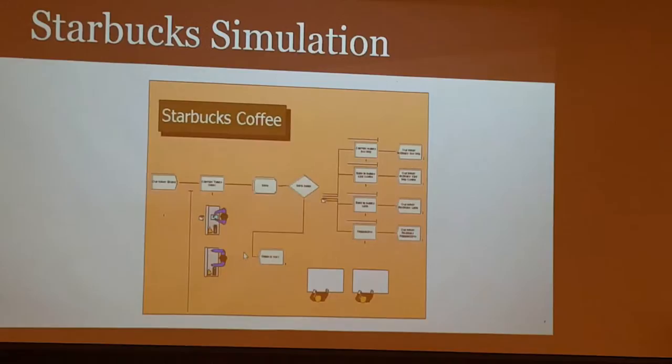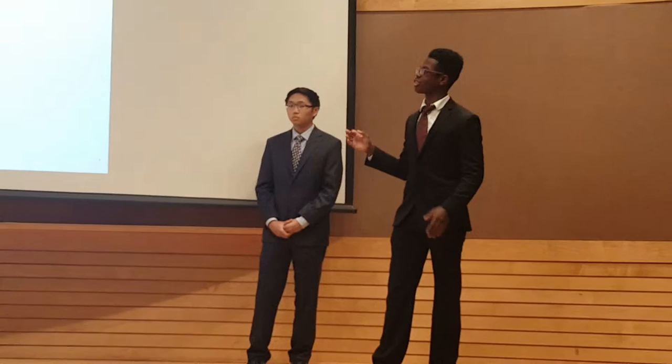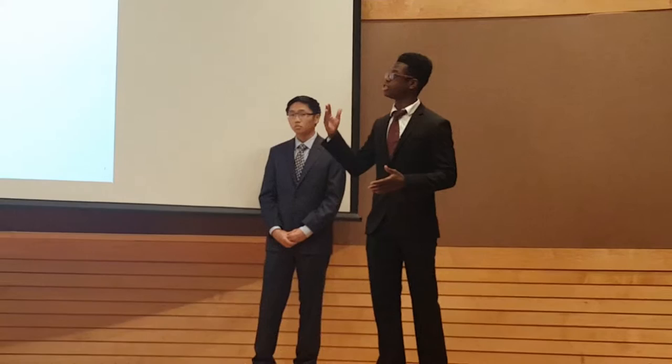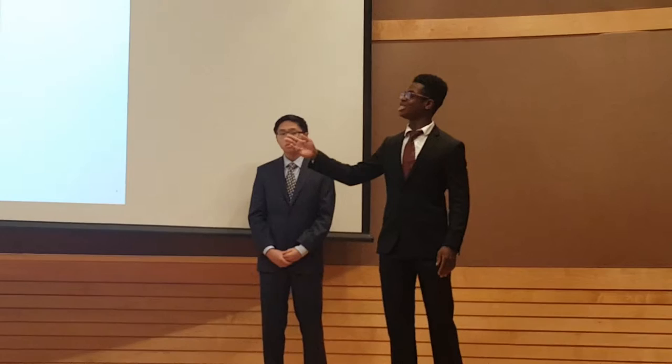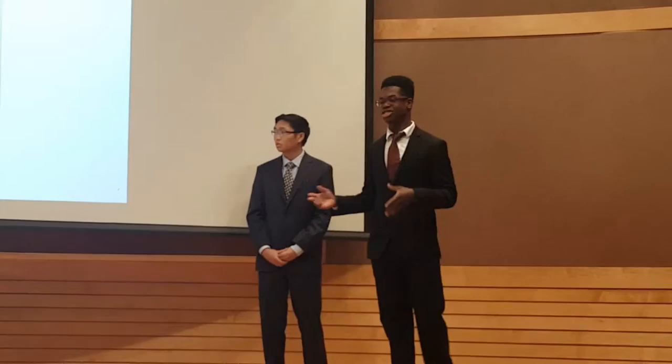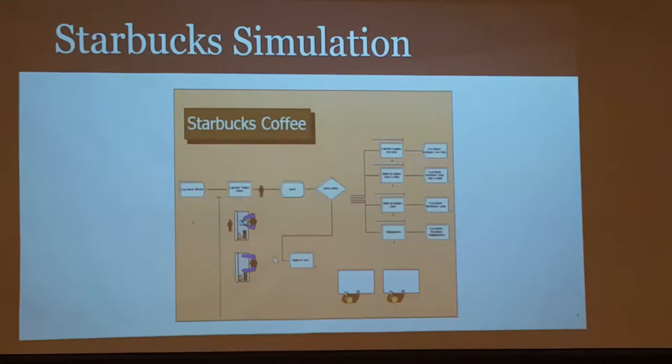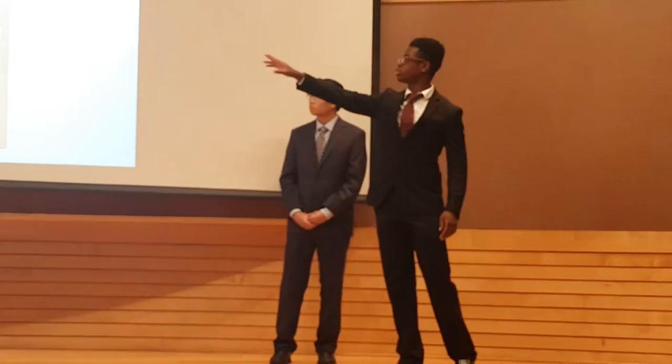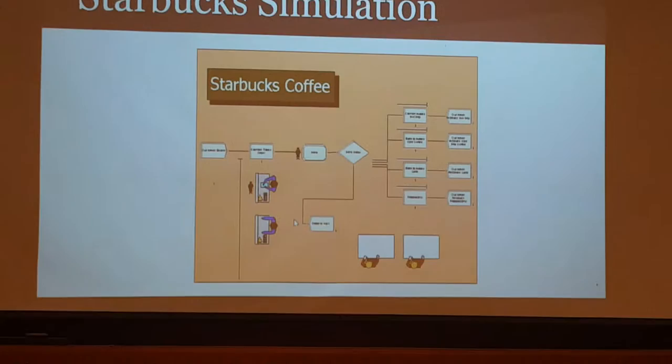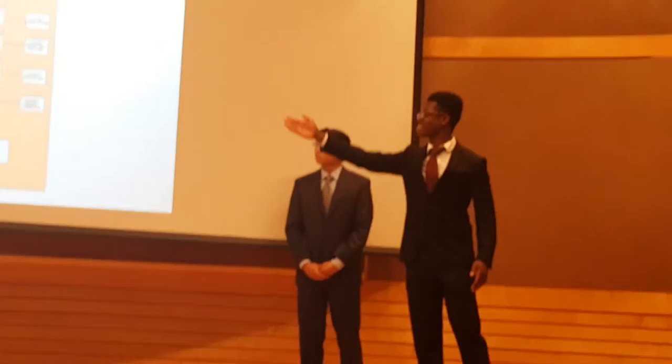This is the Starbucks simulation that we built in the Arena software. Simulations work with three main components: there is the entity, which moves through the simulation; there is the process, which acts upon the entity; and the resources, which is what the process uses to act upon the entity. Entities line up in queues to wait to use resources, and resources can be changed and manipulated to experiment with better customer output and efficiency. The entity — the customer — enters from the left side, goes into the simulation and is acted upon by the process. The resources are the baristas and cashiers.